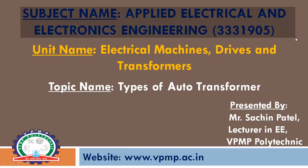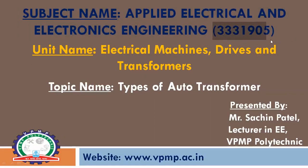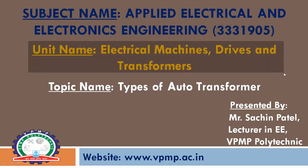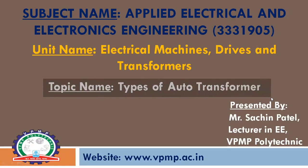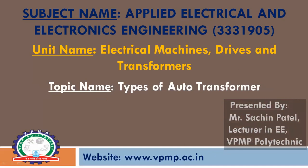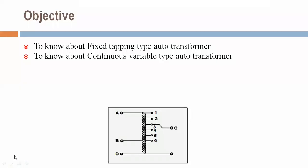Subject name: Applied Electrical and Electronics Engineering. Subject code: 3331905. Unit name: Electrical Machines, Drives and Transformers. Topic name: Types of Auto Transformer. Myself Sachin Patel, lecturer in Electrical Engineering, VPMP Polytechnic. The objective of today's lecture is to know about fixed tapping type auto transformer and continuous variable type auto transformer.